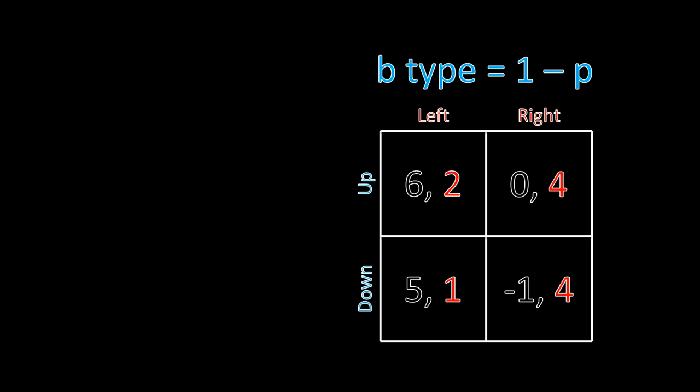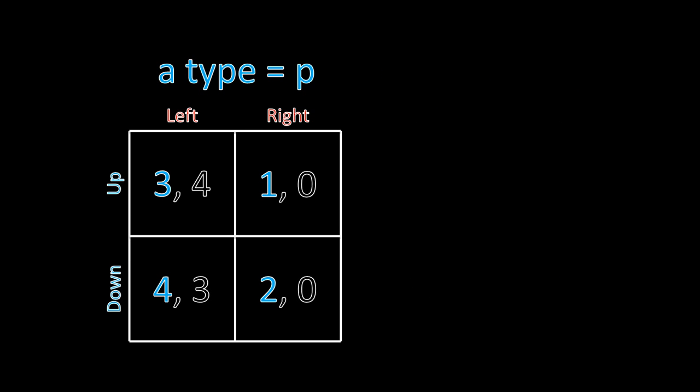We can look at dominance from player one's perspective. Player one knows whether he's the A type or the B type. If he's the A type, he can observe that down strictly dominates up — four is greater than three, and two is greater than one — so player one as the A type would never want to play up. Because he knows he's the A type, he can eliminate up as a strategy. So in any Bayesian Nash Equilibrium, player one as the A type has to play down.